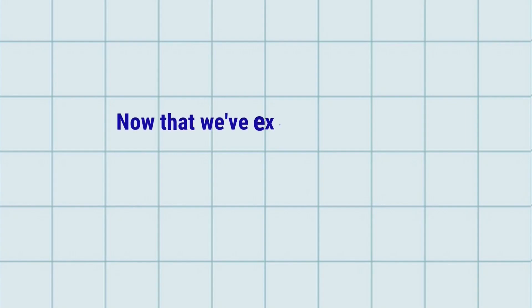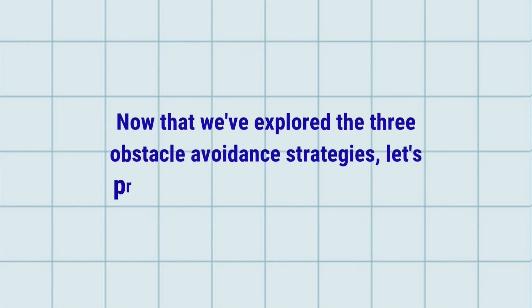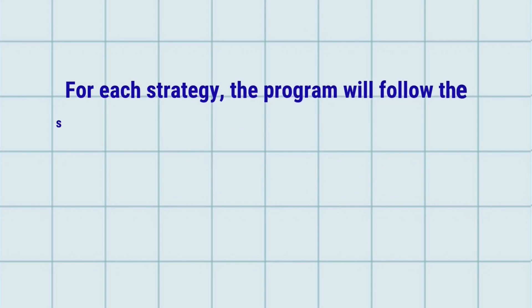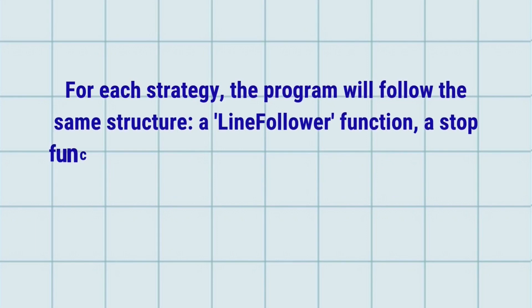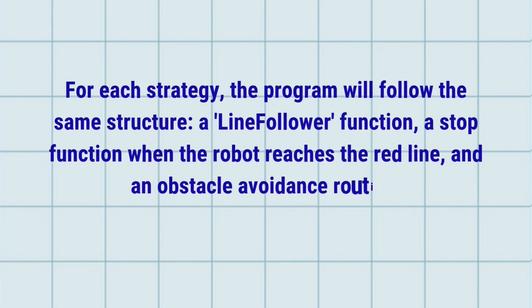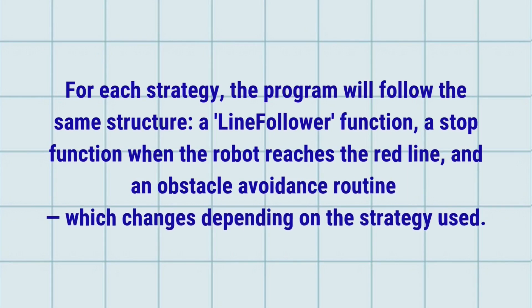Now that we've explored the three obstacle avoidance strategies, let's program them on the SPIKE Prime. For each strategy, the program will follow the same structure: a line follower function, a stop function when the robot reaches the red line, and an obstacle avoidance routine which changes depending on the strategy used.